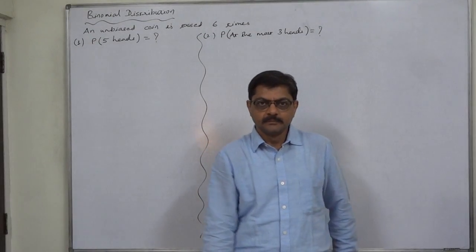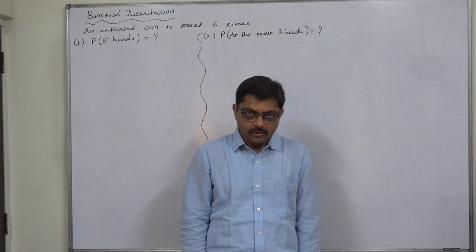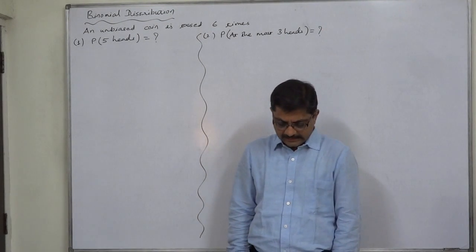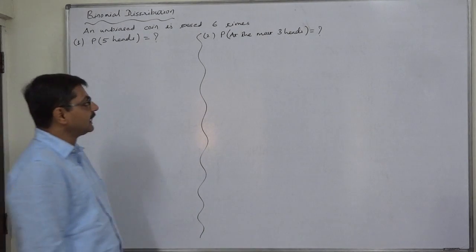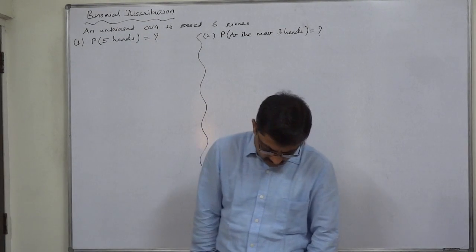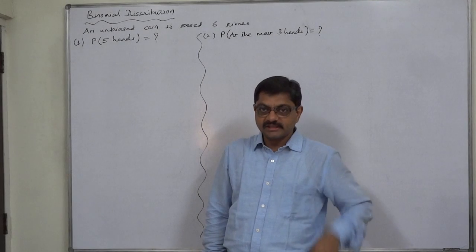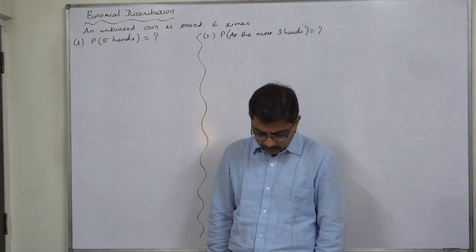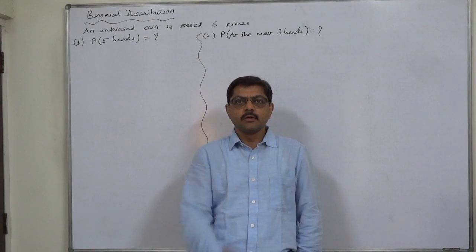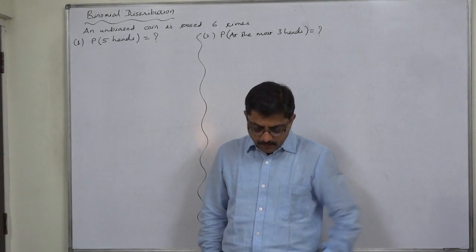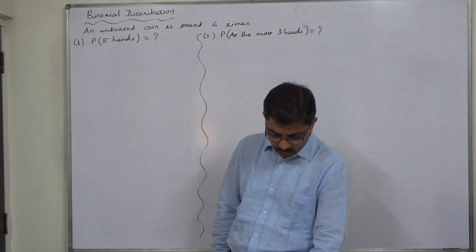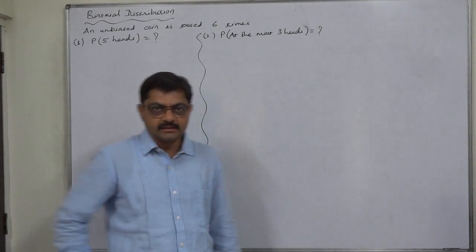Hello and welcome. Now, basics of binomial distribution. Let us take a warming up exercise: an unbiased coin is tossed six times. That means the experiment of tossing a coin is repeated six times. Find the probability of getting number one, five heads, and number two, at the most three heads.